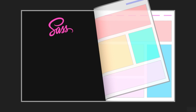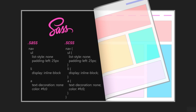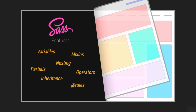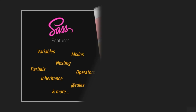SASS files are created with the .sass or .scss extensions, providing a different syntax for style sheets, as the semicolons and curly brackets used in normal CSS are no longer used in SASS files. The bonus features which come with SASS that are not yet included in CSS are variables, nesting, mixins, inheritance, and many other handy built-in features, which makes SASS very powerful and useful.